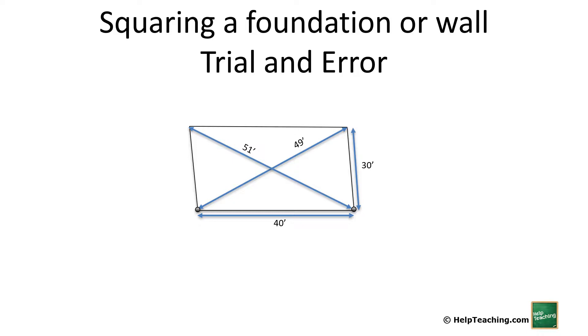So once again, I'm going to shift that far side from the long diagonal to the short diagonal. Now check again, they're both 50. I can anchor those corners, double check that they're 30 apart on the sides, 40 across on the top and the bottom, and I have my 30 by 40 foundation that's marked out.